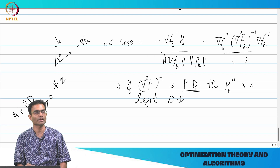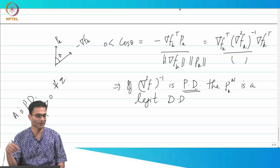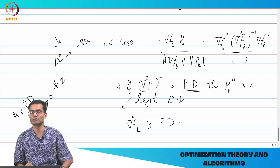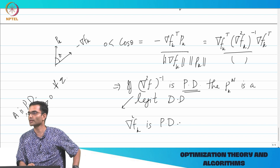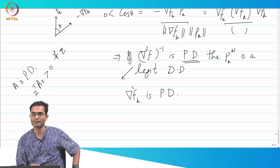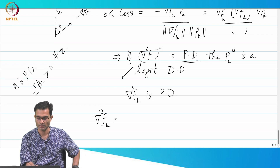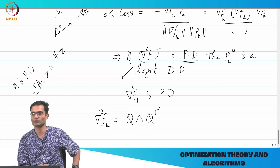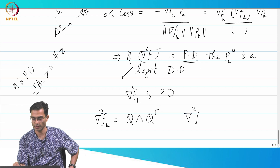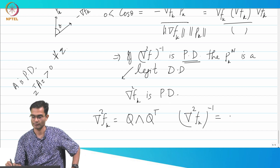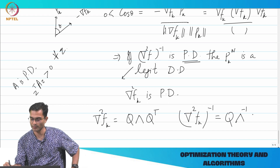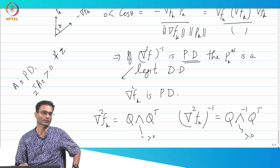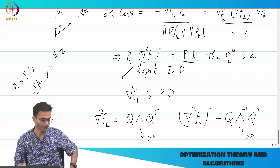In many places in the literature, it is written that the Hessian is positive definite rather than that the inverse of the Hessian is positive definite. Are these two the same? Yes, by the eigenvalue decomposition. Writing the Hessian as Q Λ Q^T, its inverse is Q Λ⁻¹ Q^T. If the diagonal values of Λ are greater than zero, then those of Λ⁻¹ are also greater than zero. So positive definiteness is preserved under inversion.